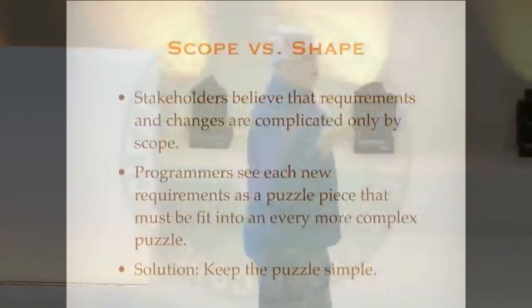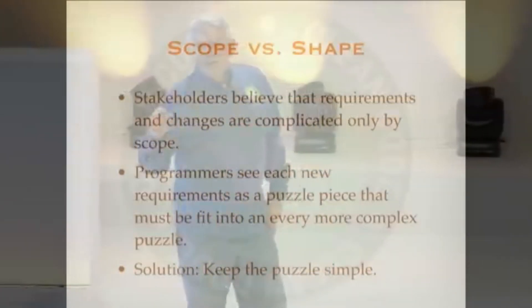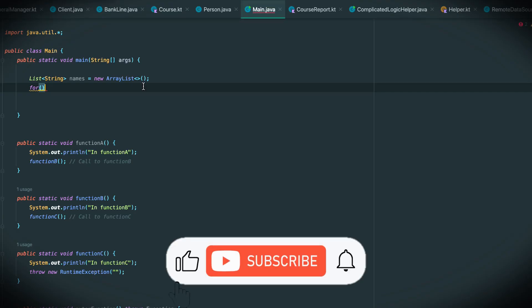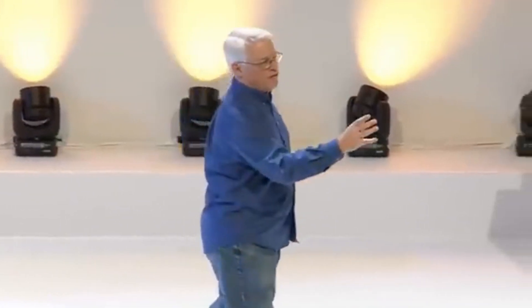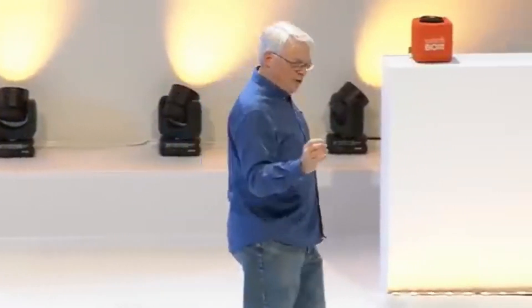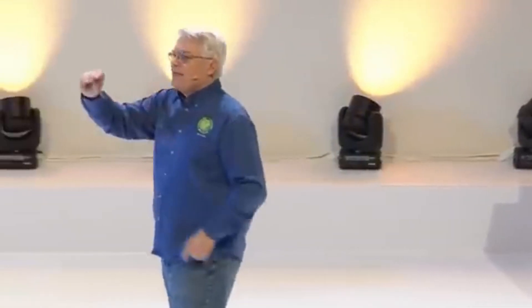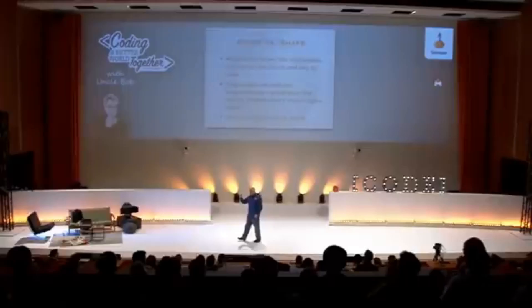But programmers don't see it that way. Programmers will build structures in their systems, and what a stakeholder believes to be a small change will cause massive repercussions through the structure of the software — so the developer looks at that as a big change. This is a faulty architecture: an architecture that lies to the stakeholders by making small changes expensive and big changes cheap.